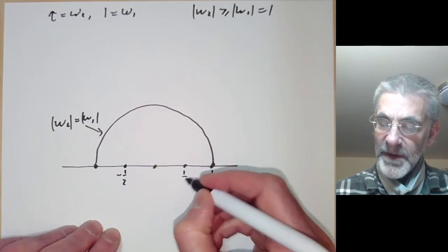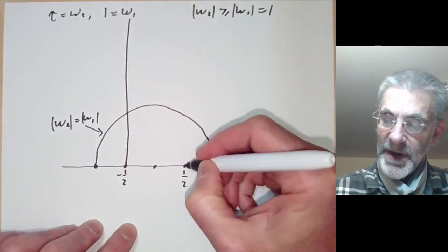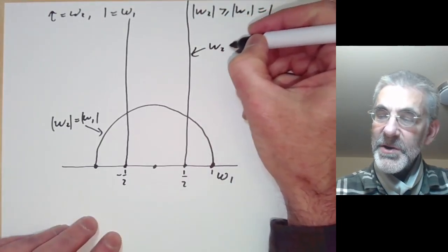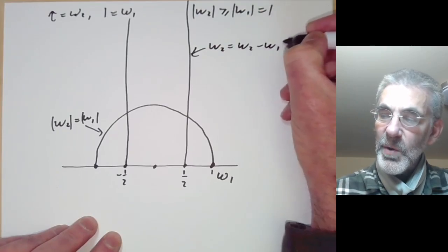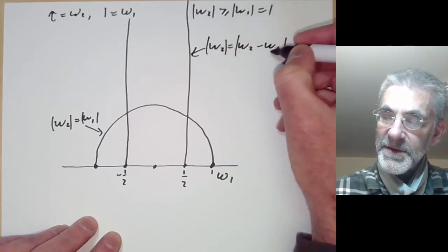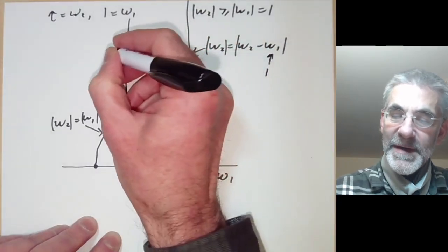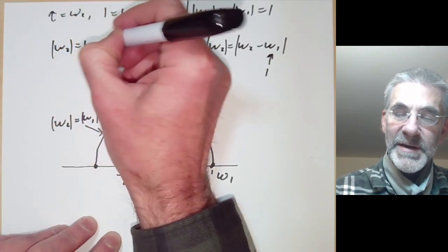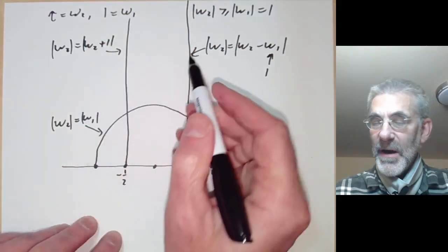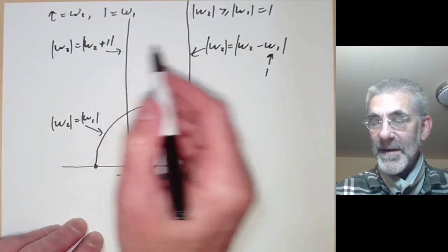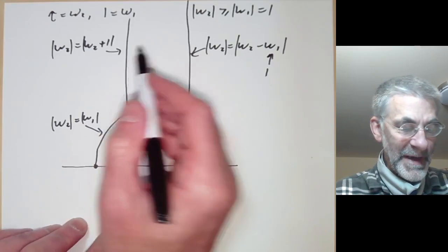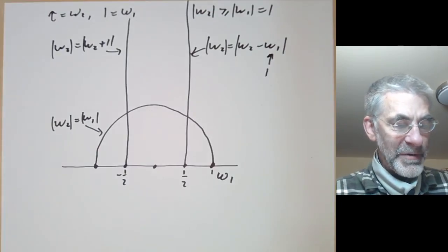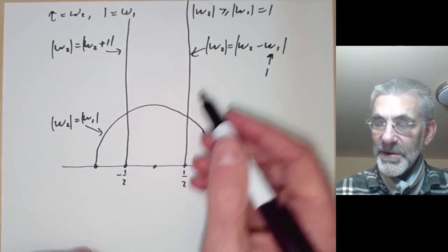And now let's draw a couple more lines. So minus a half and a half and I'm going to draw the lines going up here. And now this line here corresponds to points where omega-2 equals omega-2 minus omega-1. At least the absolute values are the same because you remember omega-1 is equal to 1. And this line here is points where omega-2 has absolute value equal to omega-2 plus 1. So in both of these cases these correspond to points where there's a sort of ambiguity about what omega-1 and omega-2 are.